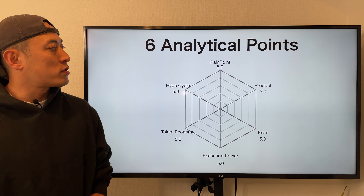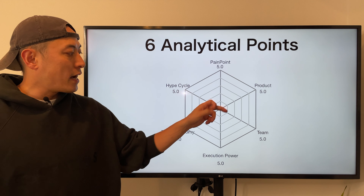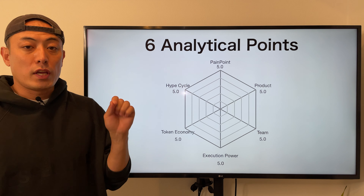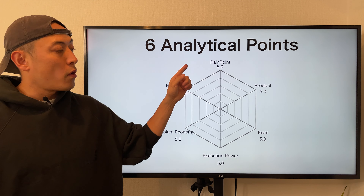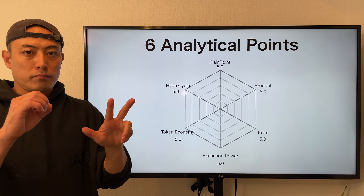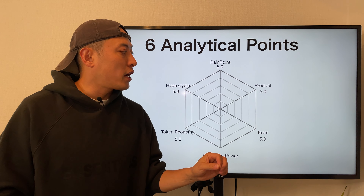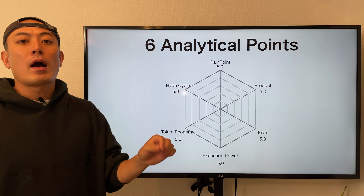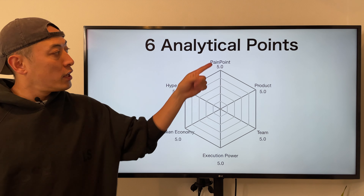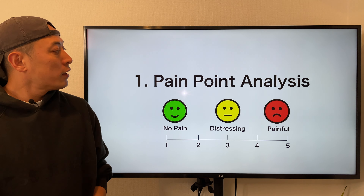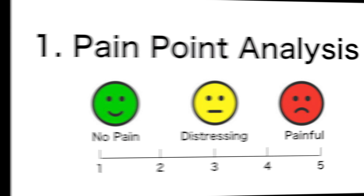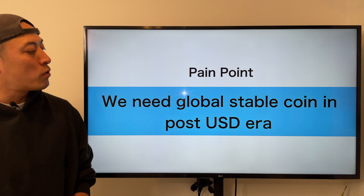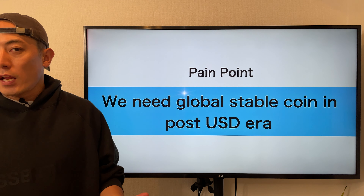Today's Terra matching category is number three: token creditors DeFi, especially the stable coin market, which is one of the critical industry layers for blockchain. As usual, I'm going to apply the six ANACRO points — Pain Points, Products, Team, Execution Power, Token Economy, and Hype Cycle — each scored up to 5.0 points for a total of 30. For more detail on my analysis method, check my other video on altcoin investment strategy.